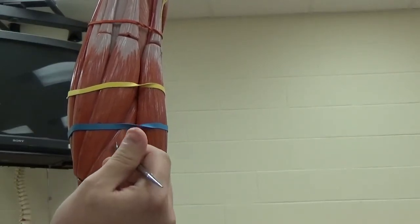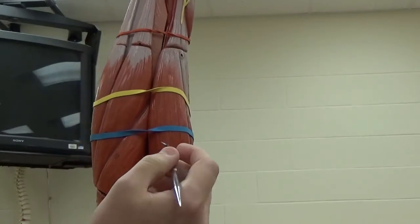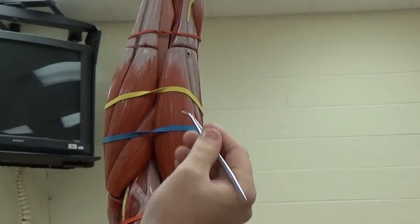Okay, so now I'm going to move towards the thumb again. So as I rotate I have the brachioradialis.